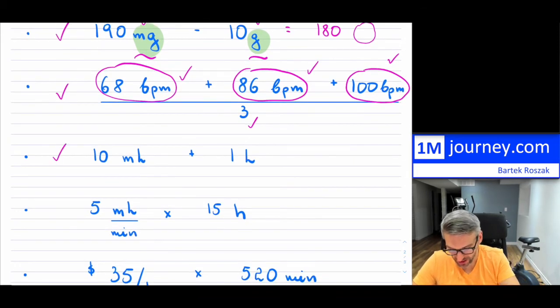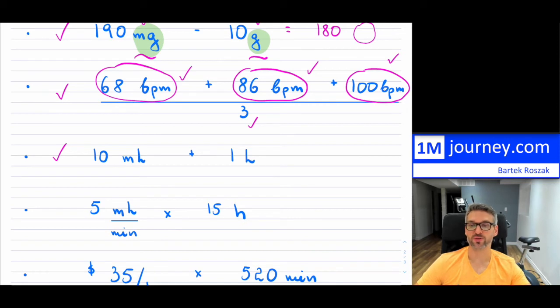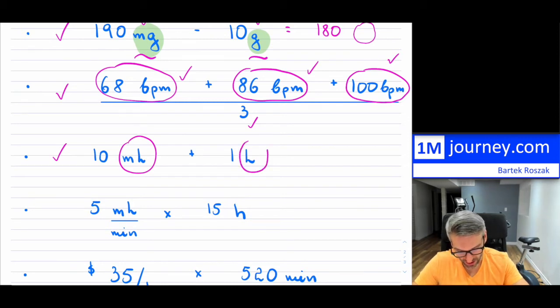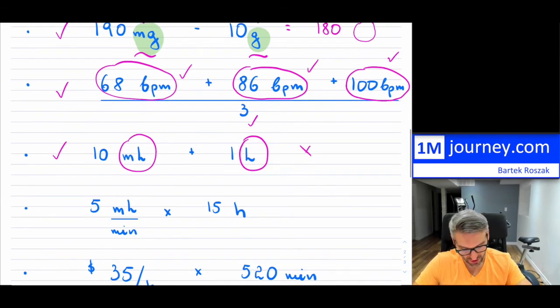Now, if I move over to the next one, so notice here, it looks like I am trying to add up two volumes together. Again, we do have a problem of inconsistency. One is in milliliters, one is in liters. So this is no good.